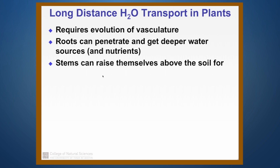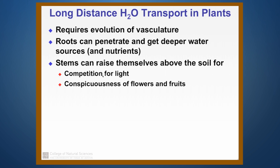Plants can also begin to produce stems and raise themselves significantly above the soil, which has real advantages. It makes them more competitive for light so individuals can overtop one another and use light resources without competition. It also means they can move their flowers and fruits up in the air and make them more conspicuous for pollinators and for seed dispersal agents. It also helps with transport of pollen, fruits, and seeds carried in the air, getting them above the boundary layer close to the surface so they can be carried long distances.